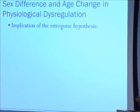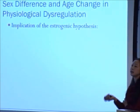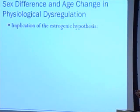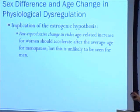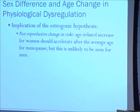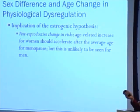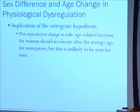The estrogenic hypothesis, stemming from the biology literature, has a demographic implication: there will be some post-reproductive change in the risks of physiological dysregulation, because age-related increases for women should accelerate after menopause due to reduction of estrogen and increased abdominal fat storage. This is unlikely for men, whose testosterone declines relatively gradually.